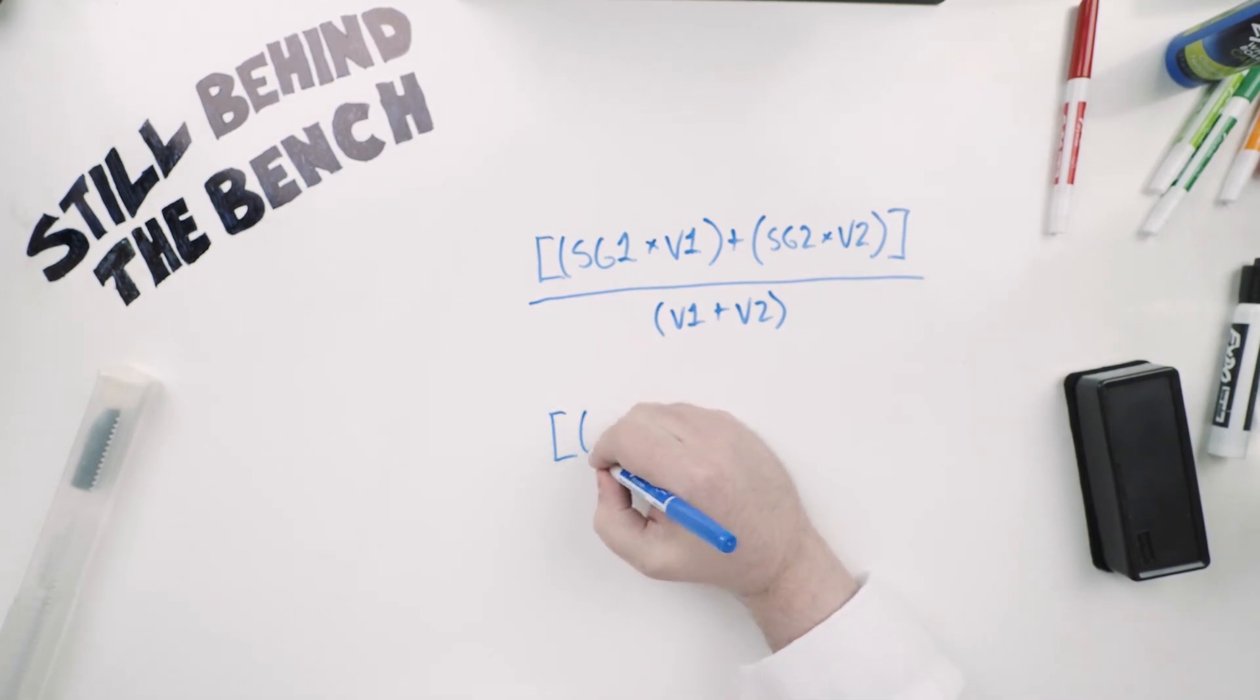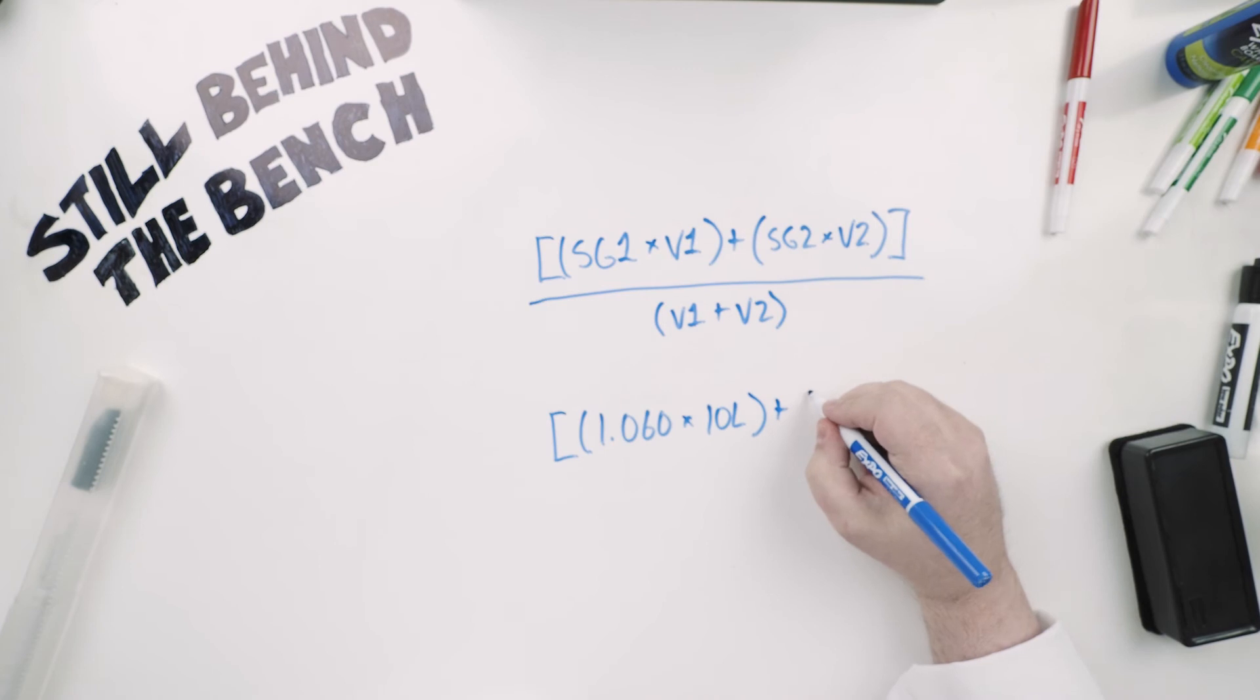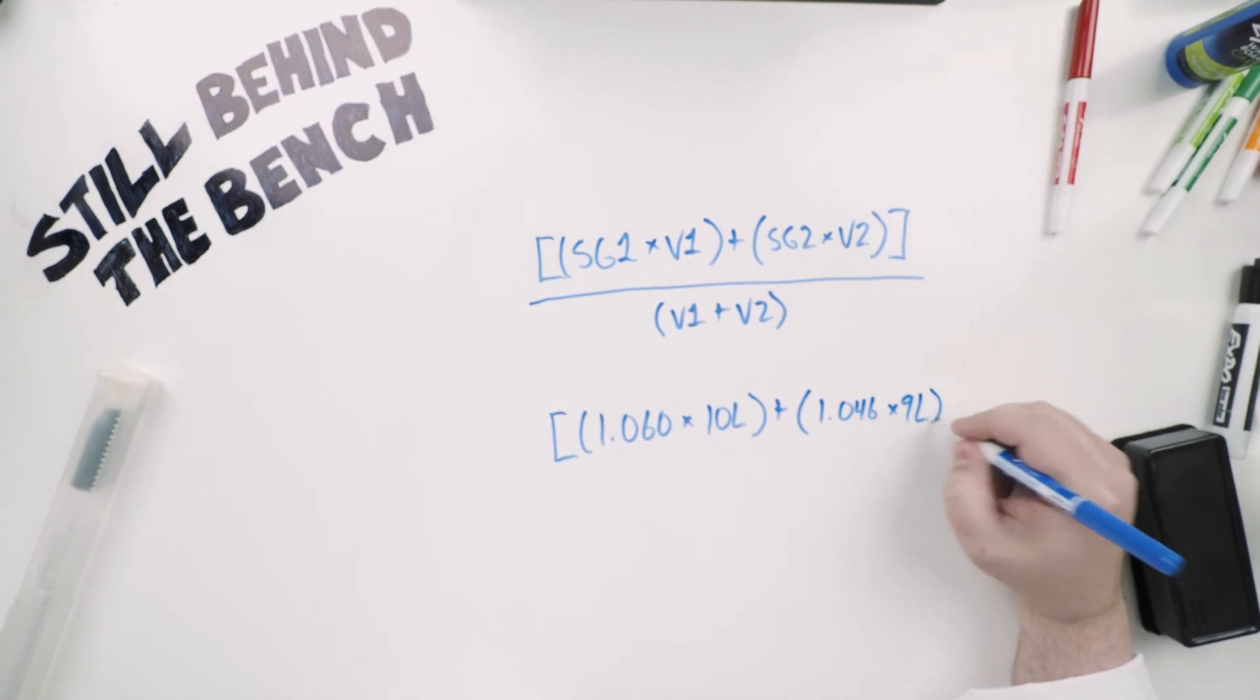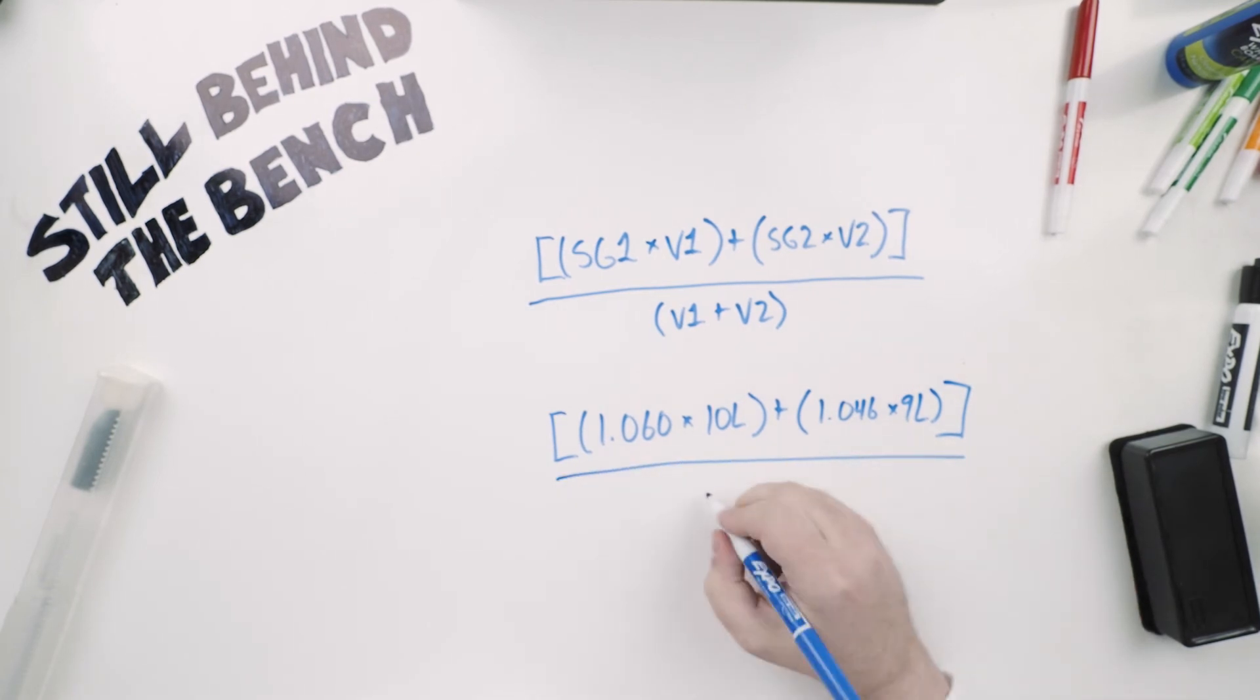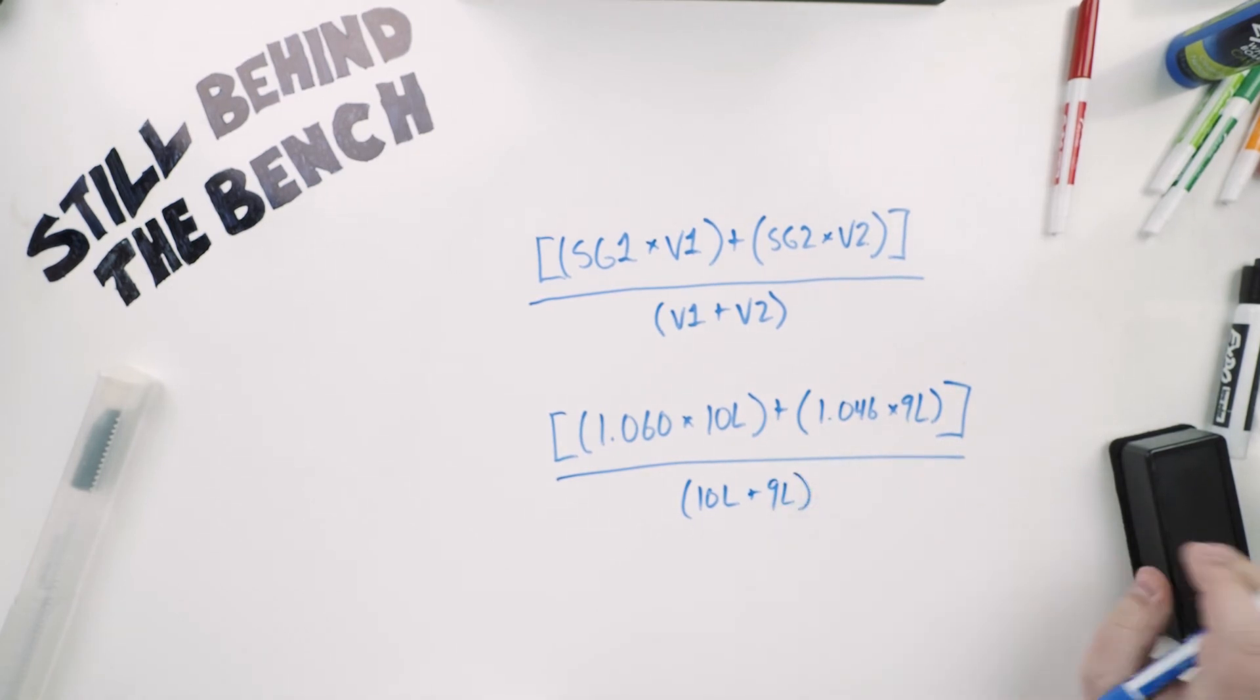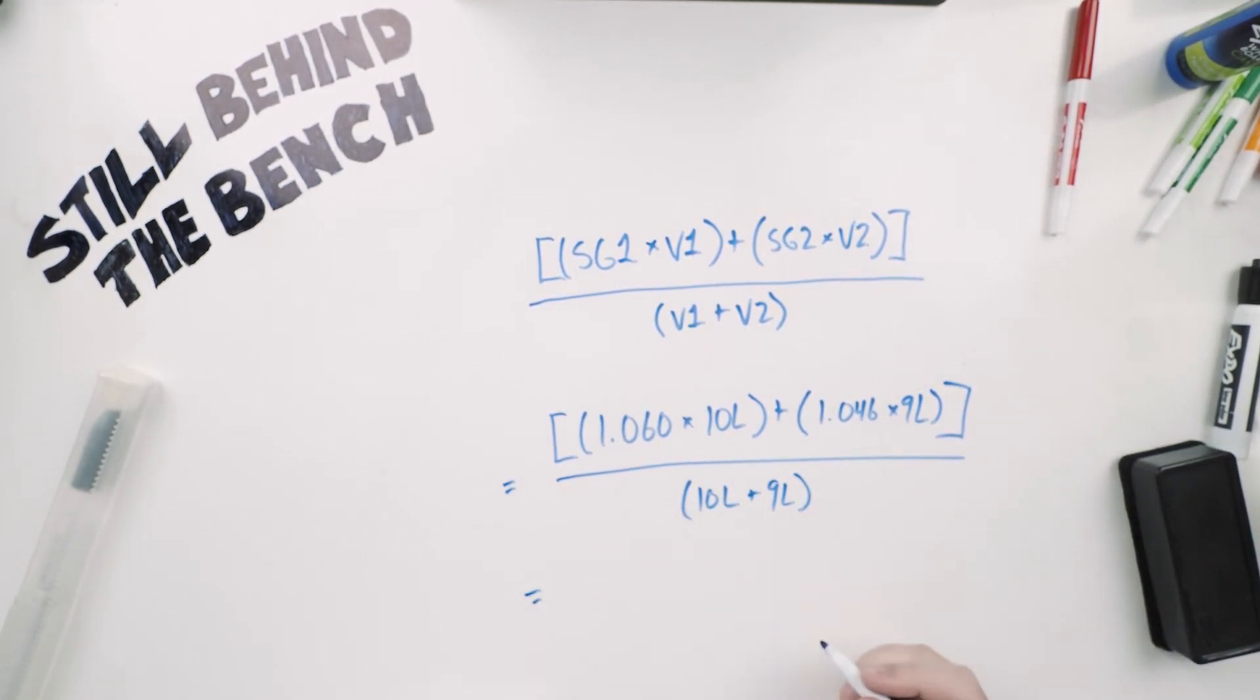Let's say we have a 10 liter wash that's at 1.060 times 10 liters and then we're going to add 1.055 sugar wash but it's only 9 liters. Divide by 10 liters plus 9 liters and we get 1.053 at 19 liters. Pretty easy math.